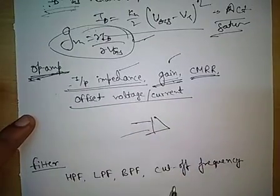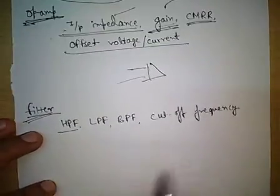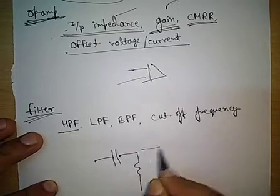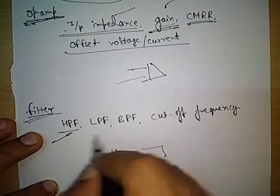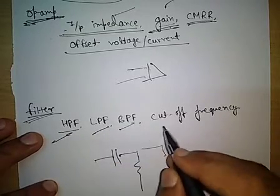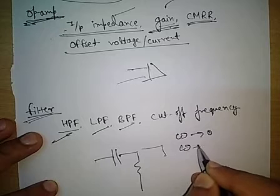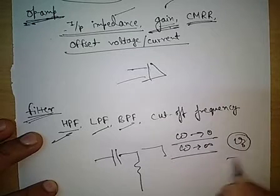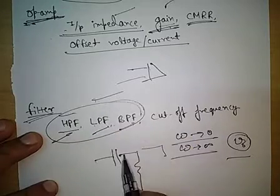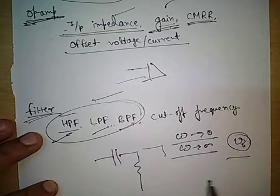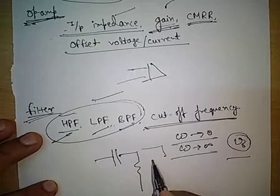Now coming to the last topic — filters. A circuit with capacitors, resistors, or inductors will be given and you'll be asked to identify whether it is a high pass filter, low pass filter, band pass filter, or another type. The approach is to use ω → 0 and ω → ∞ and analyze what appears at the output. By doing this analysis we can determine whether it is high pass, low pass, or band pass. We must prepare this type of question before the GATE exam.